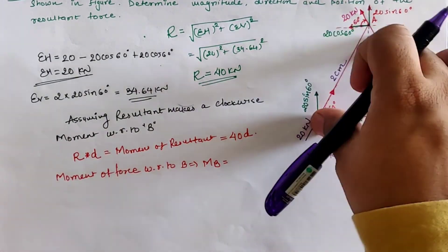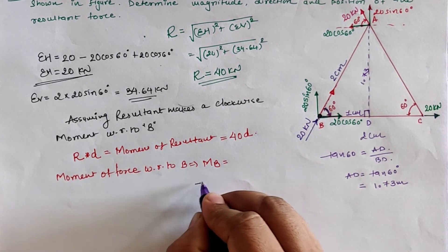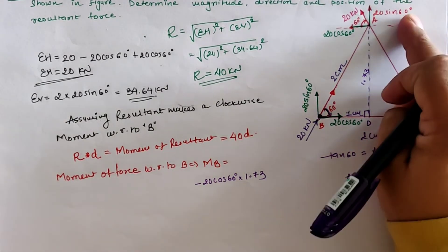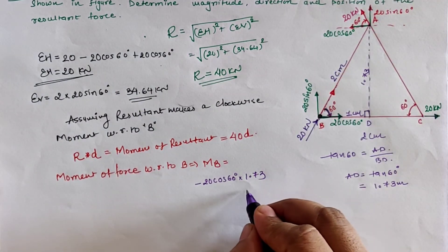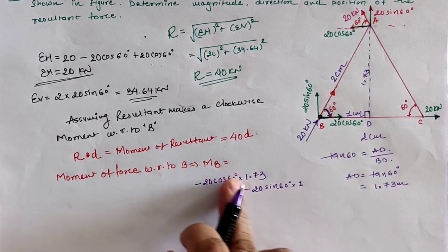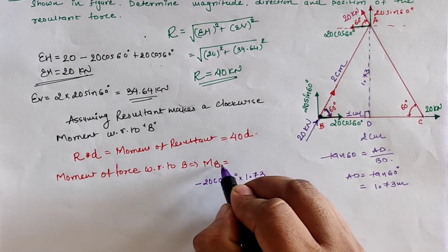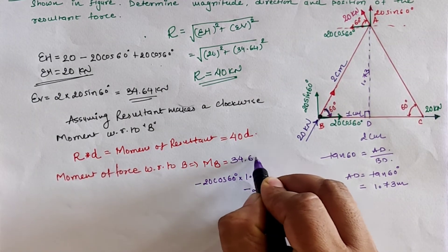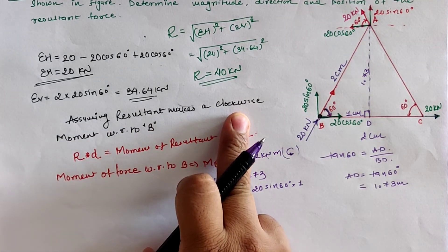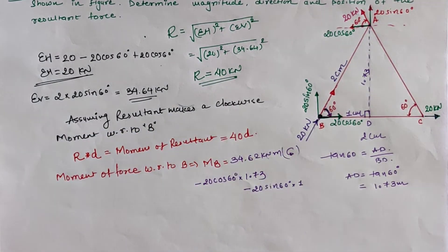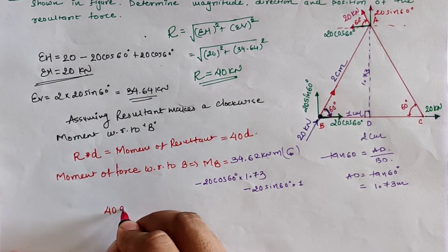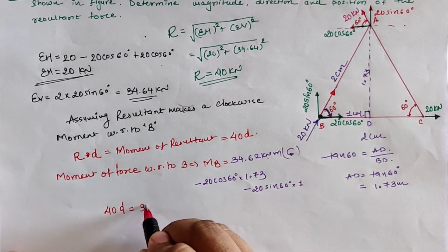Taking the moment at B: 20 cos 60 creates an anticlockwise moment with respect to B, so it is minus 20 cos 60 × 1.73. And 20 sin 60 again creates an anticlockwise moment, so it is negative 20 sin 60 × 1 (perpendicular distance). Summing all values, the moment with respect to B is 34.62 kN·m, and this moment is anticlockwise. This means our assumption of a clockwise resultant moment was wrong, as the resultant and force system moments must be equal.